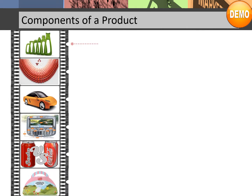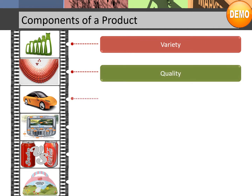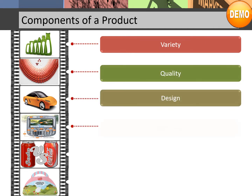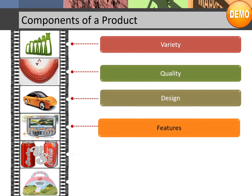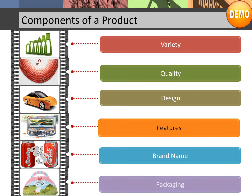Components of a product: variety, quality, design, features, brand name, and packaging.